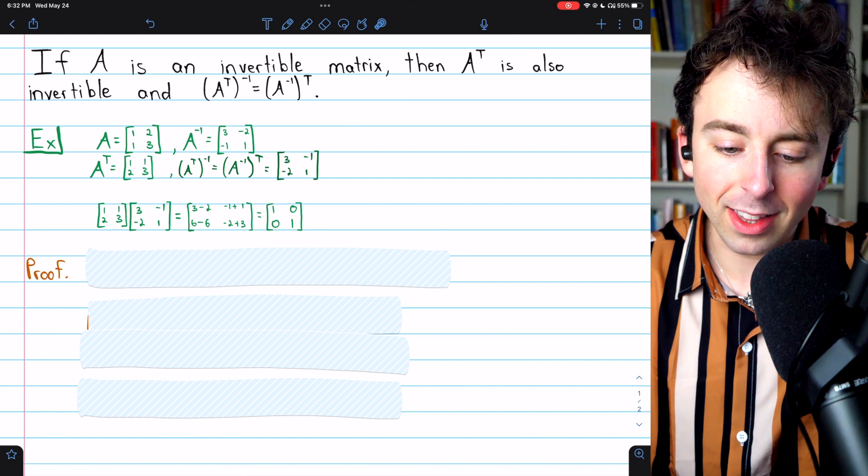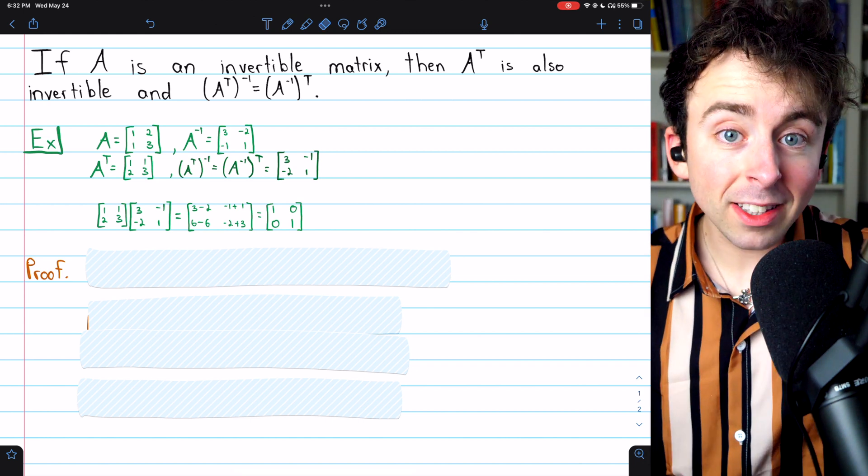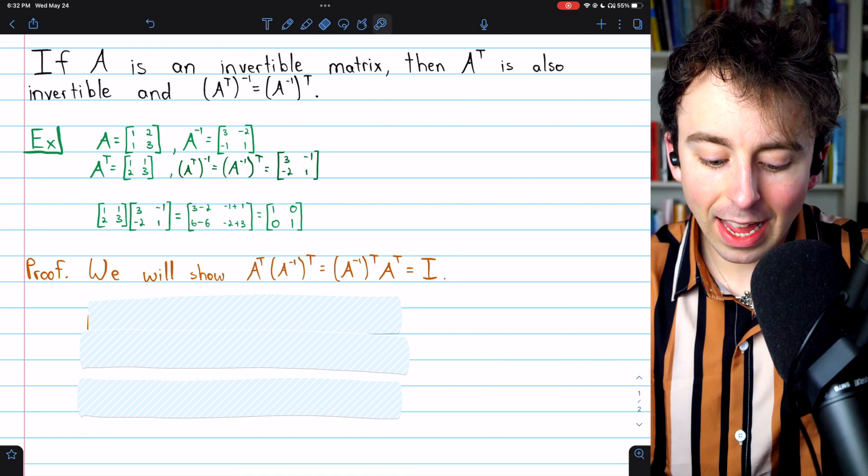You could try multiplying these in the other direction if you want. That will also give us the identity. So that's this property in action. Let's get into the proof.